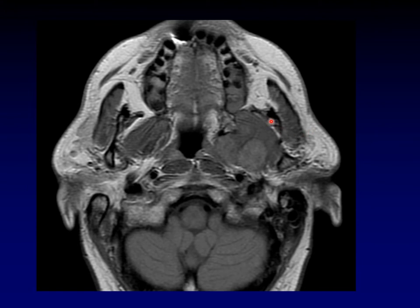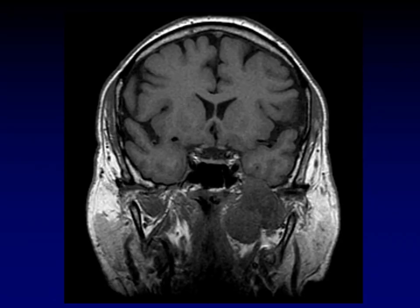Here's another mass in the masticator space. Look how it is compressing the parapharyngeal fat, pushing it posteriorly and medially. We're within the muscle, and although there's nothing on the axial images that will clearly tell you what kind of tumor this is, the coronal image gives us a clue: this tumor is knuckling up through foramen ovale and spreading down into the infratemporal fossa. This is a schwannoma arising from V3.